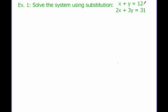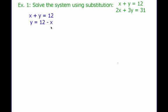We're going to solve this system right here using substitution: x plus y equals 12, and 2x plus 3y equals 31. Now, it doesn't really make a difference if I solve for x or y, but I'm going to choose to solve for y in this one — you could solve for x, it doesn't really matter. So, I'm going to say x plus y equals 12, and if I solve for y, all I do is subtract x.